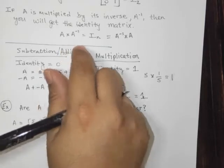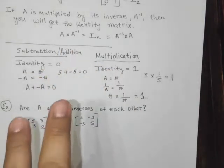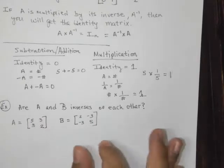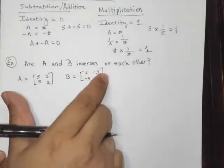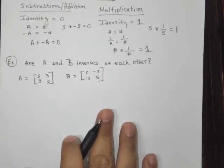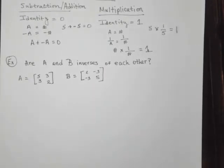But in general, for matrices, multiplication doesn't commute. So A times B might not be the same as B times A. But if these two are inverses, we're going to get the identity matrix.